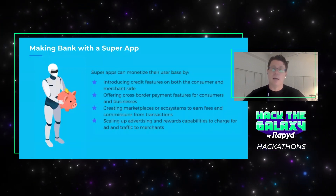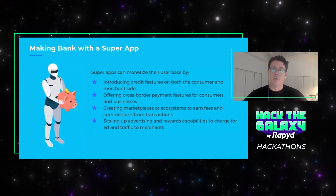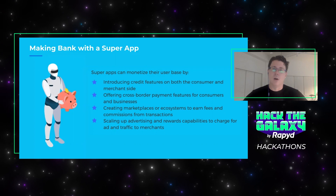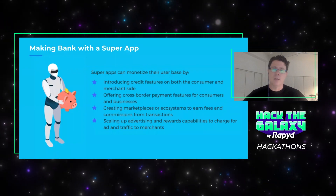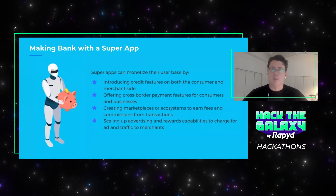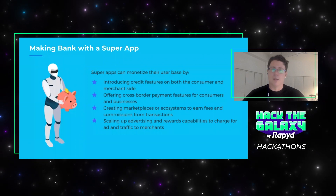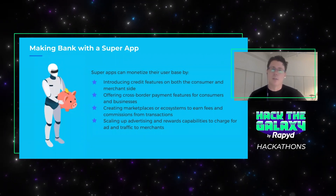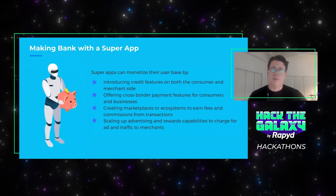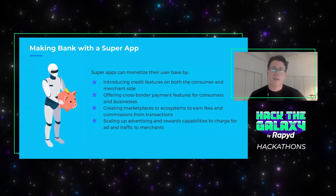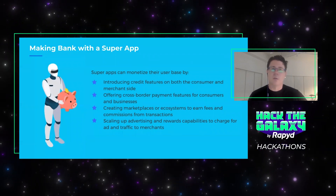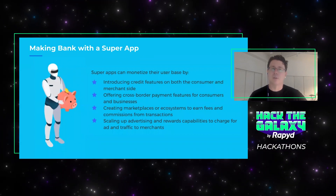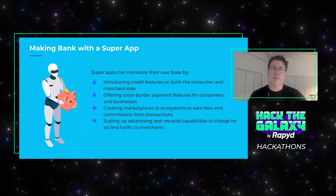You can monetize a lot of different ways. You can monetize as a marketplace and earn fees and commissions. You can monetize through credit offered to either buyers or sellers, or through payments — and cross-border payments have foreign exchange, which is usually worth a lot of money. Or you can scale up advertising and rewards capabilities that let you charge merchants or advertisers to interact with your users. There are a lot of different ways to make money with a super app strategy.